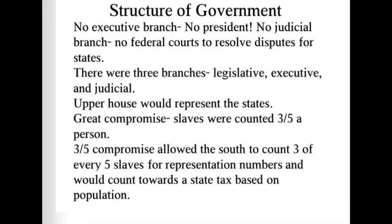The new Constitution created three branches: legislative, executive, and judicial. The upper house would represent the states. The Great Compromise was reached. Through the Three-Fifths Compromise, three of every five slaves would count for representation numbers and would count toward a state's tax based on population.